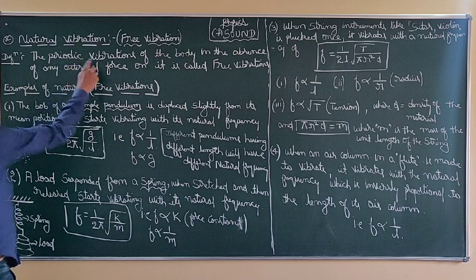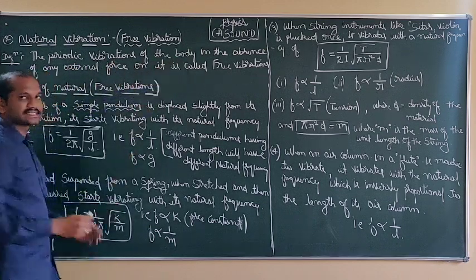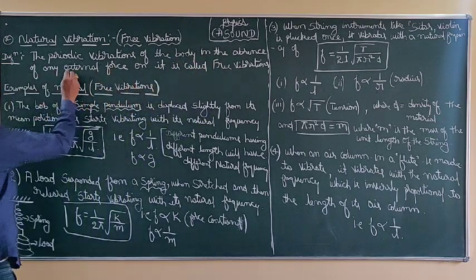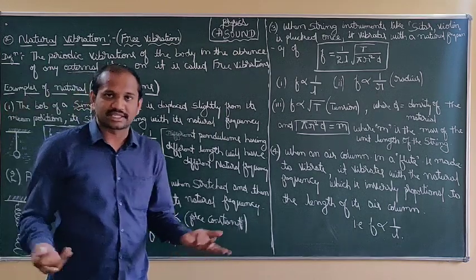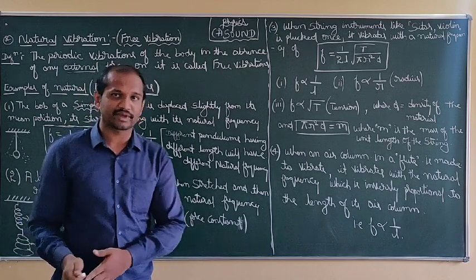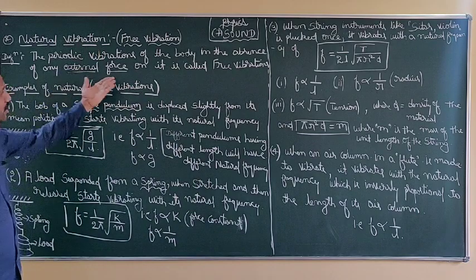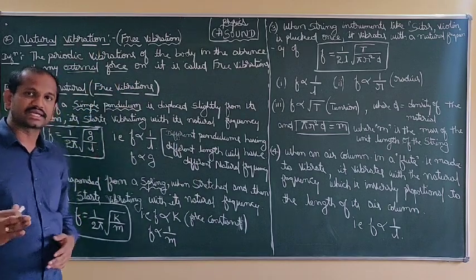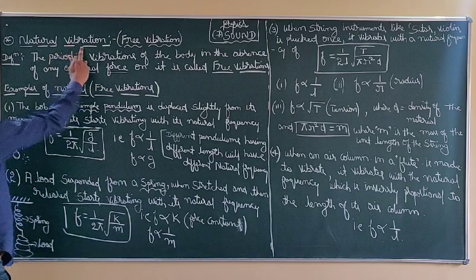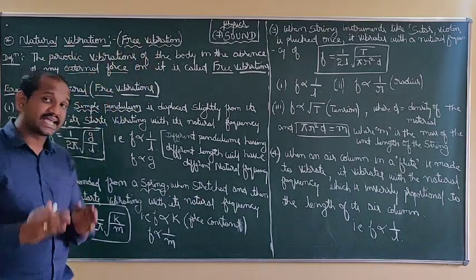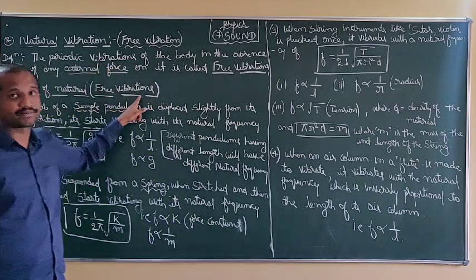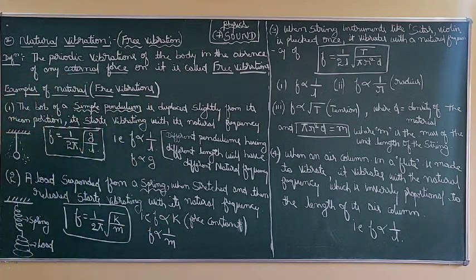Let us come to the definition. The periodic vibrations of a body — in this case the example of the swing — in the absence of any external force. Is that situation possible on Earth? No, because everywhere there is air producing a resistive force, giving us damped vibration. In natural vibration there is no external force, so we can consider only vacuum. The other name of natural vibrations is free vibrations. The examples of natural vibrations or free vibrations are very important from the examination point of view.